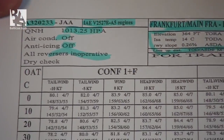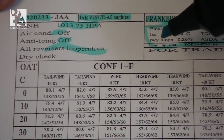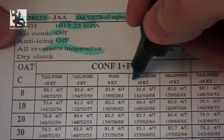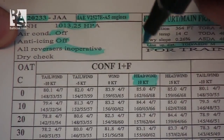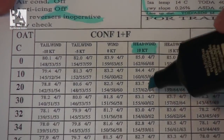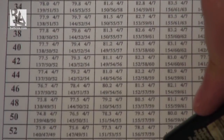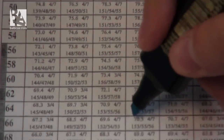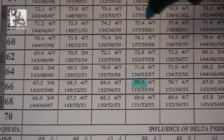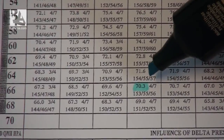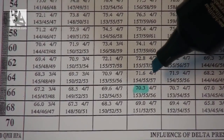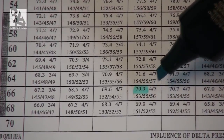Now we find our weight figure against the wind. Let's say we have a headwind of 10 knots at Frankfurt and our weight is 70 tons. We go all the way down until we find 70.3, which is right here. We can always go a little bit above our weight — in this case 70.3 — but we can never go below, so 69 would already be unacceptable.